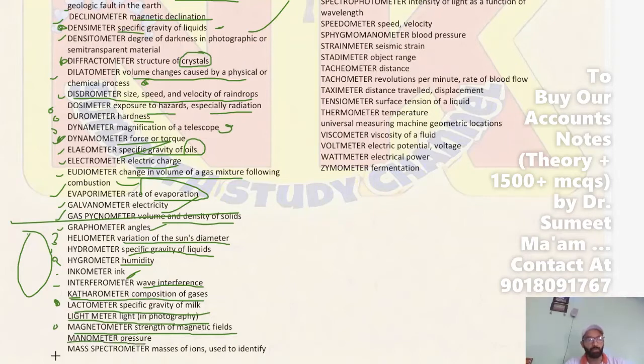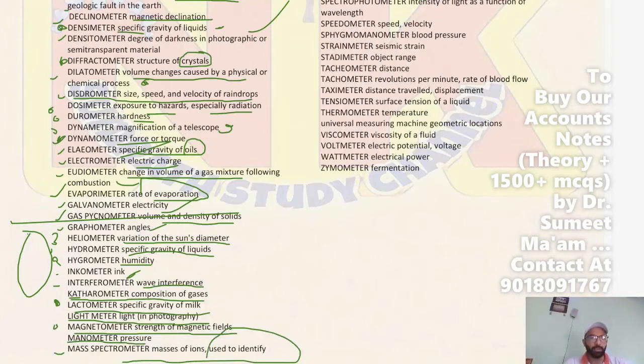Next, Manometer is used to measure pressure. Next, Mass Spectrometer is used to measure the mass of ions and is used to identify chemical substances.